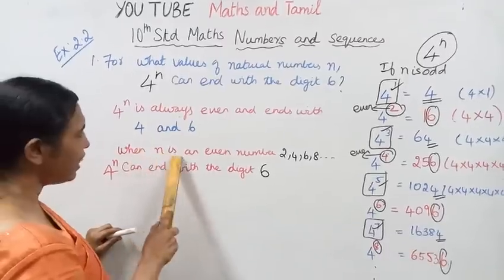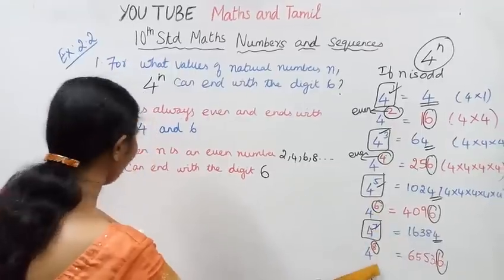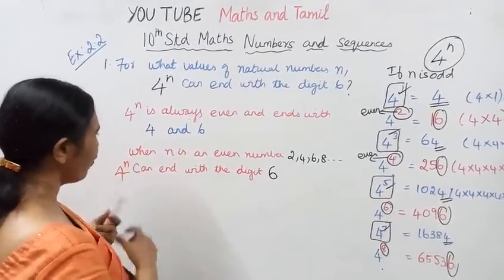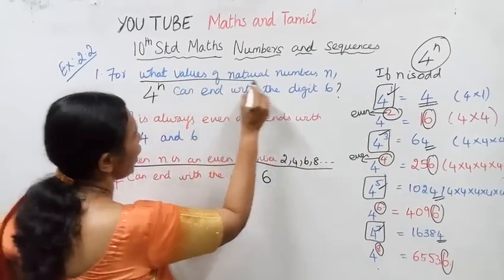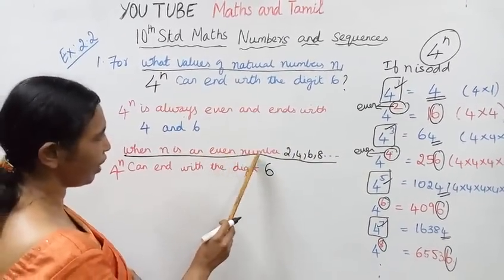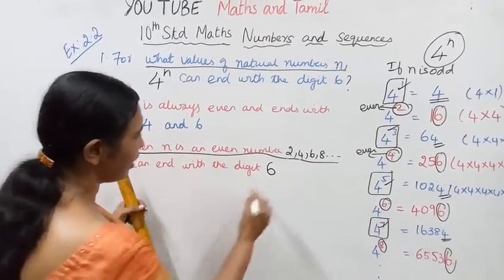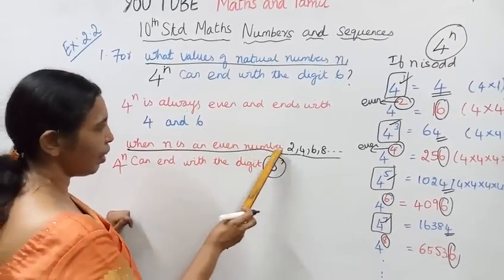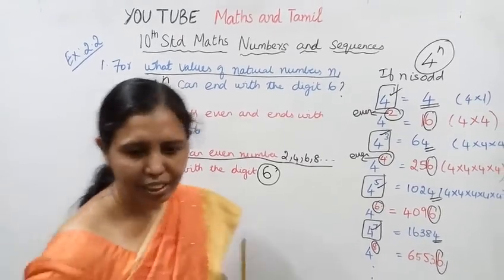When n is an even number — 2, 4, 6, 8, etc. — 4 power n can end with the digit 6. So the answer is: for what values of natural numbers n does 4 power n end with digit 6? When n is an even number.